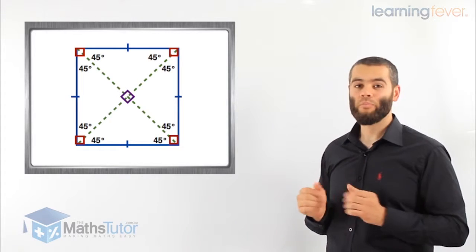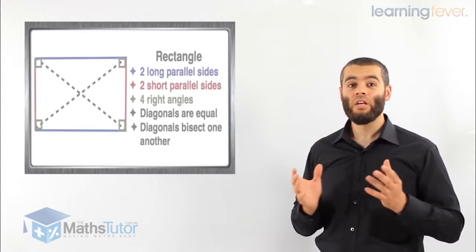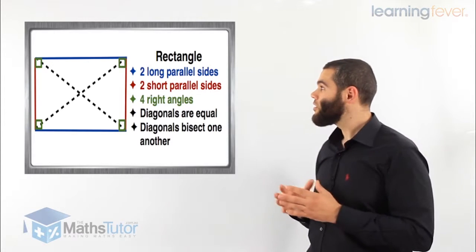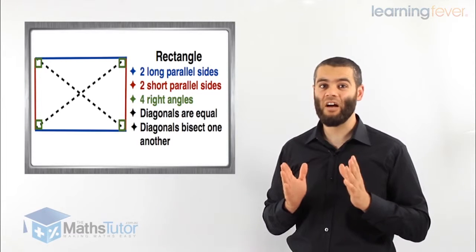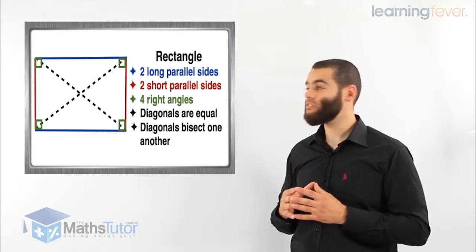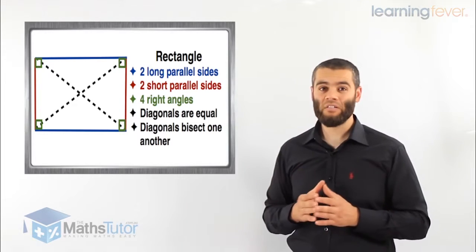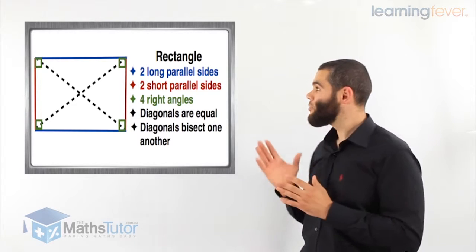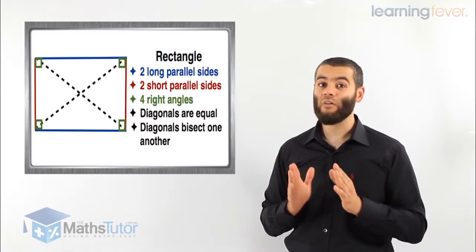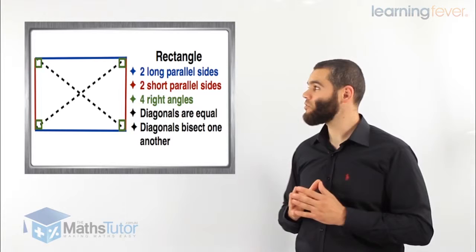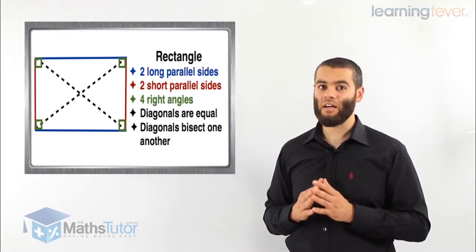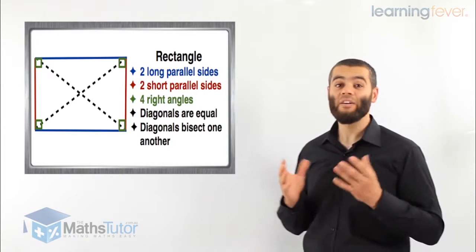Then we have the rectangle, another famous quadrilateral. The rectangle has two long parallel sides marked in blue, and two short parallel sides marked in red. It also has four right angles, marked in green. The diagonals of a rectangle are equal to one another and bisect one another, cutting each other in half.